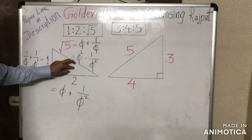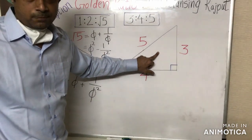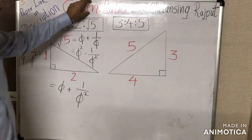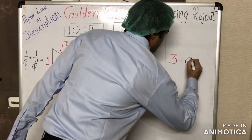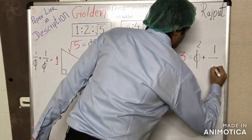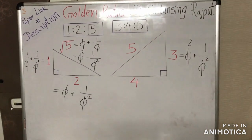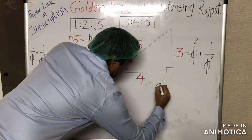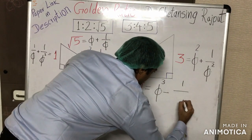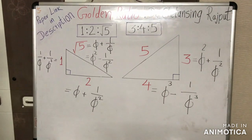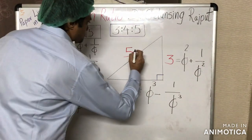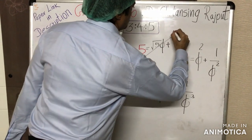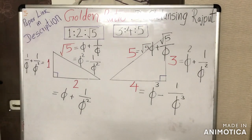Just like the 1:√5 triangle, the sides of the 3-4-5 Pythagorean triple can also be expressed in precise terms of golden ratio. Side 3 is precisely equal to φ² + 1/φ². The longer cathetus 4 is precisely equal to φ³ − 1/φ³. And the hypotenuse 5 is also precisely equal to √5·φ + √5/φ.